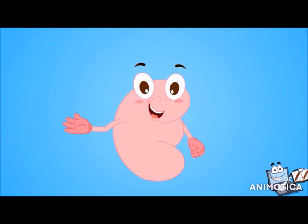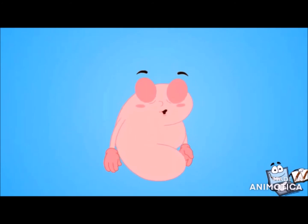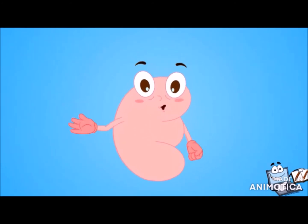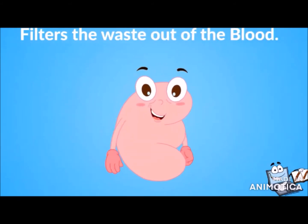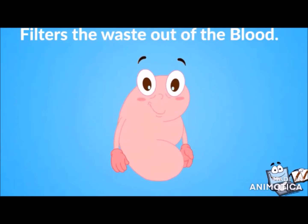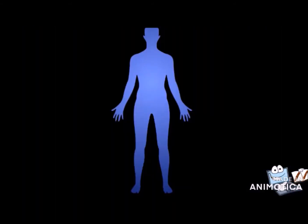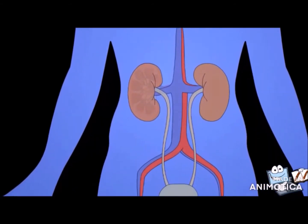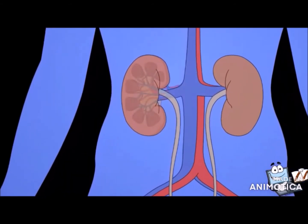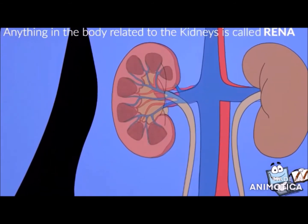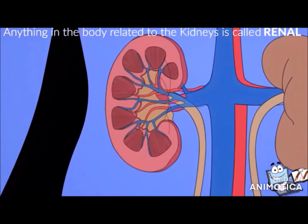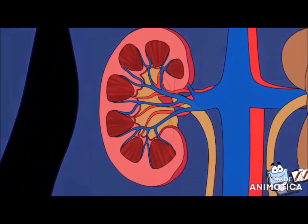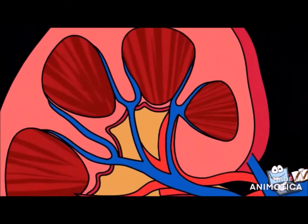Kidneys have a lot of work to do and that's why they are always busy. One of the main jobs of the kidneys is to filter the waste out of the blood. Kidneys filter your blood and make urine. Blood passes into the kidney through the renal artery — anything in the body related to the kidney is called renal — and it returns through the renal vein.